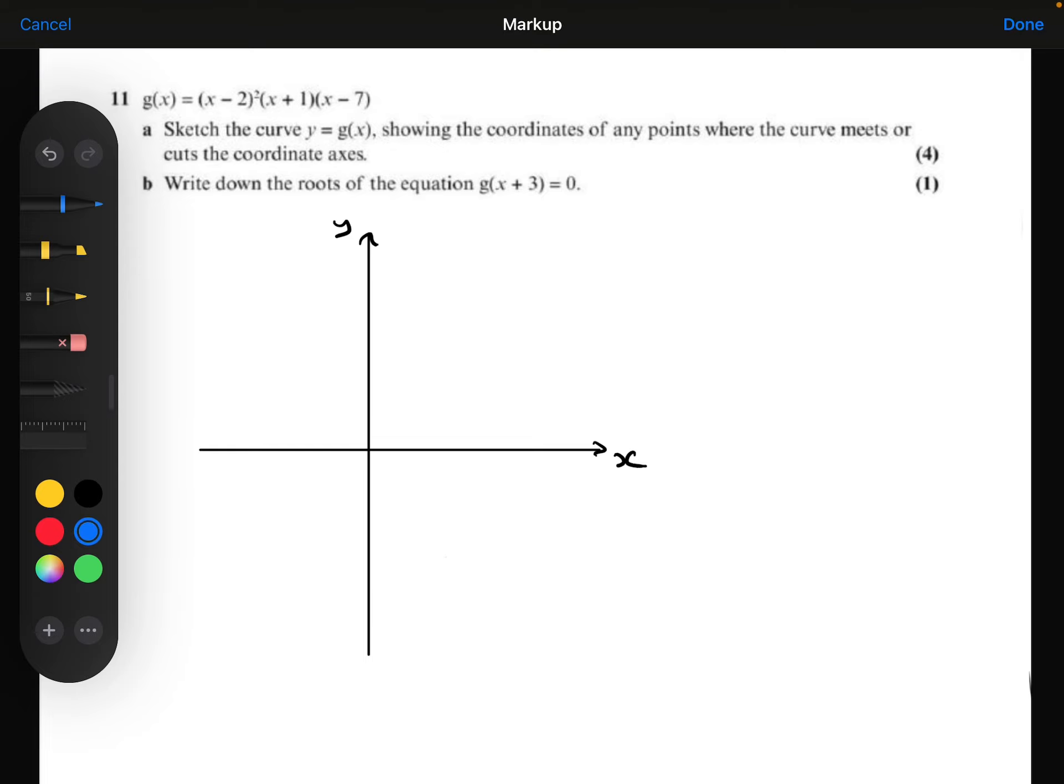Right, I can see that I've got a repeated root when x equals 2. I know it's a repeated root because of the squared there. I've got another root when x equals minus 1, and then I've got another root when x equals plus 7.